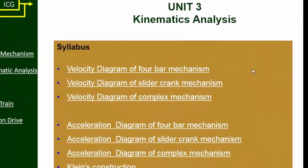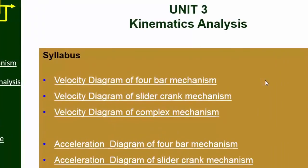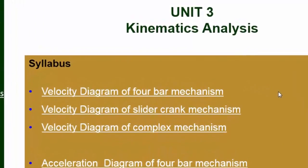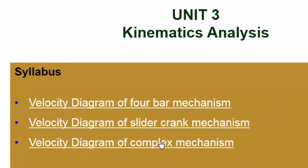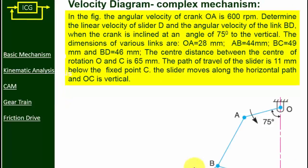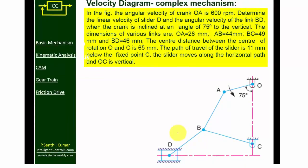Welcome to Intelligent Control Group. In this lecture we are going to discuss the velocity diagram of a complex mechanism. Let me first find the number of links used in this mechanism: link 1 is fixed OA, link 2 is AB, link 3 is BC, link 4 is BD, link 5 is the slider, and link 6 — so totally this mechanism has six links.